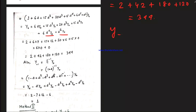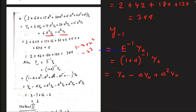For y(-1), the formula is written using the shift operator as e^(-1) y0, which expands as (1 + delta)^(-1) y0 = (1 - delta + delta^2 - delta^3 + ...) y0. So y(-1) = y0 minus delta y0 plus delta^2 y0 minus delta^3 y0. Substituting: y0=2, delta y0=7, delta^2 y0=12, delta^3 y0=6. That gives ultimately minus 6.